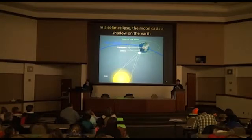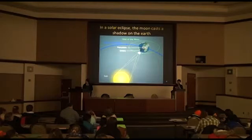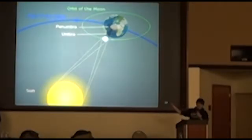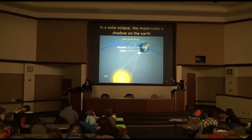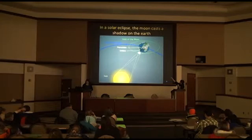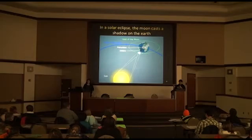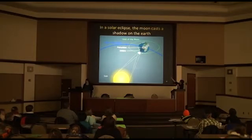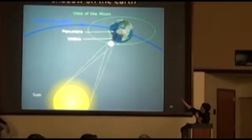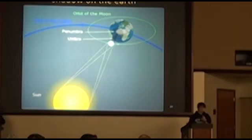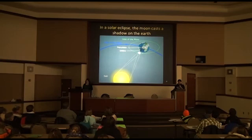This is how a solar eclipse happens. If the moon is in the right spot, it casts its shadow right on Earth. You can see this shadow here and this little black dot — that is where the total solar eclipse actually happens. Only in that small little area does the moon completely block the sun. This larger shadow is where a partial solar eclipse happens, where the moon blocks part of the sun but not the whole thing.